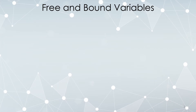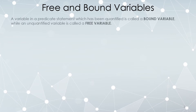We're developing our language of discussing predicate statements. The first thing we want to talk about are free and bound variables. You've got a predicate statement and it's got variables in it. If the variable has a quantifier that controls it, it's called a bound variable. If it doesn't, it's called free.